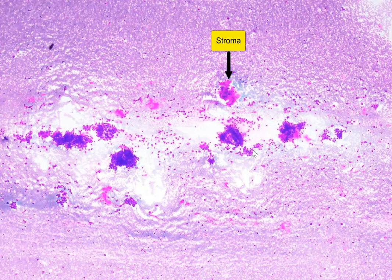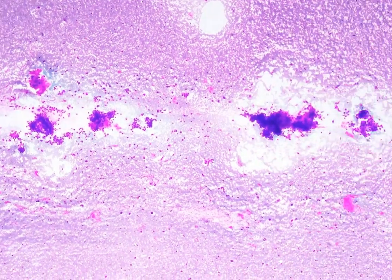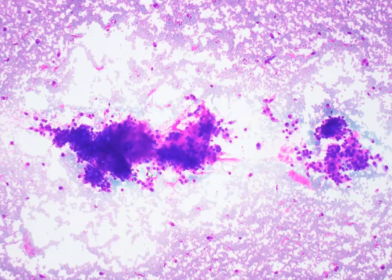The epithelial cells are cohesive, but we also see them occurring as dispersed cells. Panning around, we can see epithelial cells which are very closely intermixed with this metachromatic stroma.